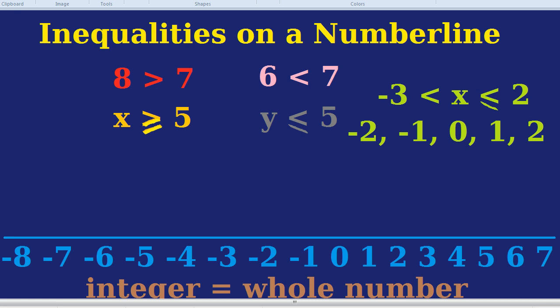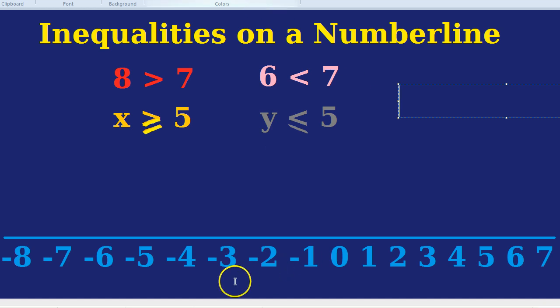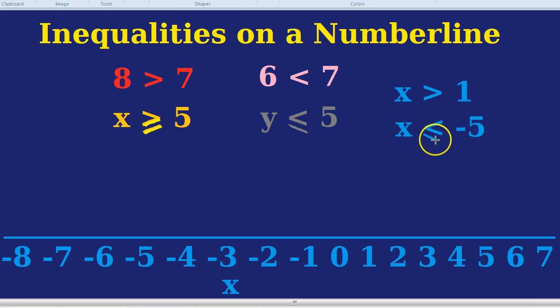Let's do one last one. How about if we had the inequality, two separate inequalities linked together on the same number line. This is the x number line. How about if we had the inequality x is greater than 1 and x is less than or equal to minus 5. Let's just have a go at this last one.